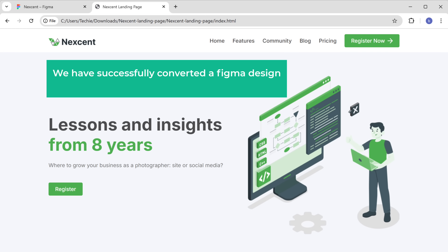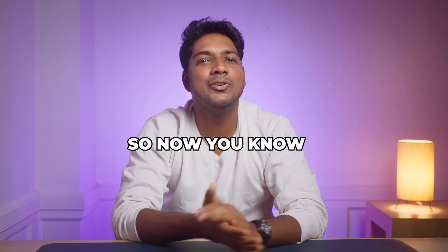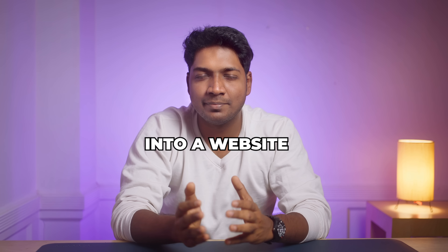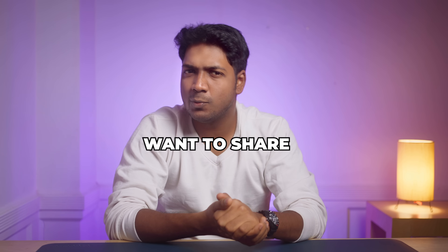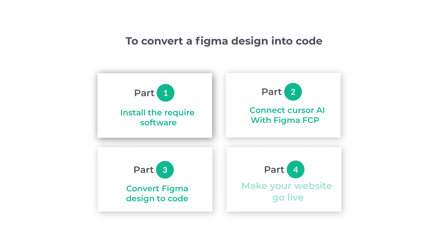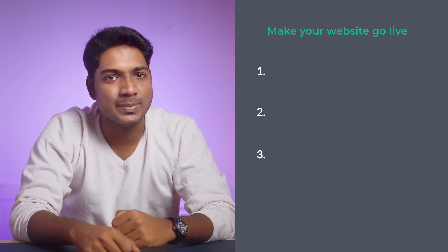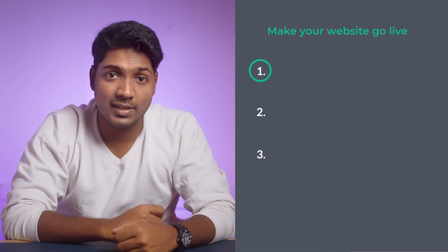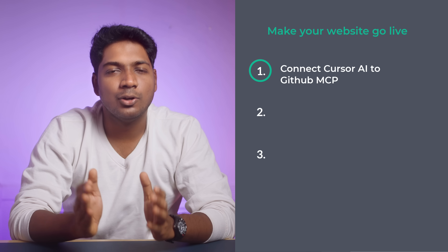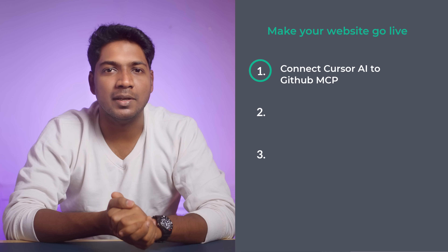We have successfully converted a Figma design into code using Cursor AI. But what if you want to share it online? Next, let's see how you can publish a landing page and make it live online. To make your website go live, we are going to do three steps. The first step is to connect Cursor AI to GitHub MCP.